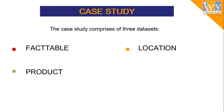The case study comprises three datasets under Coffee Chain. The first dataset is named Fact Table, the second is Location, and the third is Product.